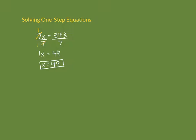We want to go back and check our answer. The original problem is asking: 7 times what number equals 343? By solving this equation we're saying x must equal 49, so we're saying 7 times 49 equals 343. To check, we substitute our value: instead of x, we write 49.